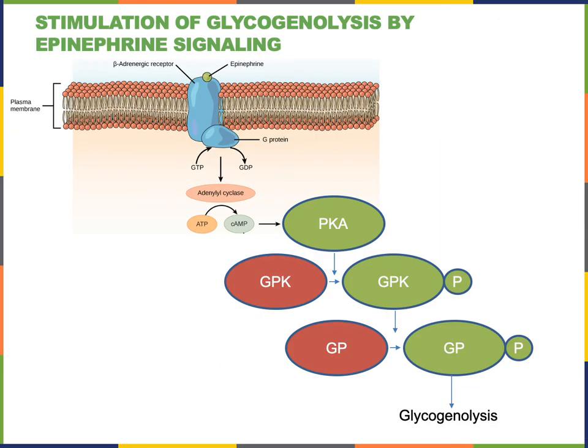Epinephrine, which is also known as adrenaline, is a water-soluble hormone secreted by the adrenal gland in response to stress. One of the effects of epinephrine is to stimulate glycogenolysis. This will release glucose into the blood from the liver, and glucose will then be broken down by cells throughout the body to provide energy that will help those cells cope with stress.